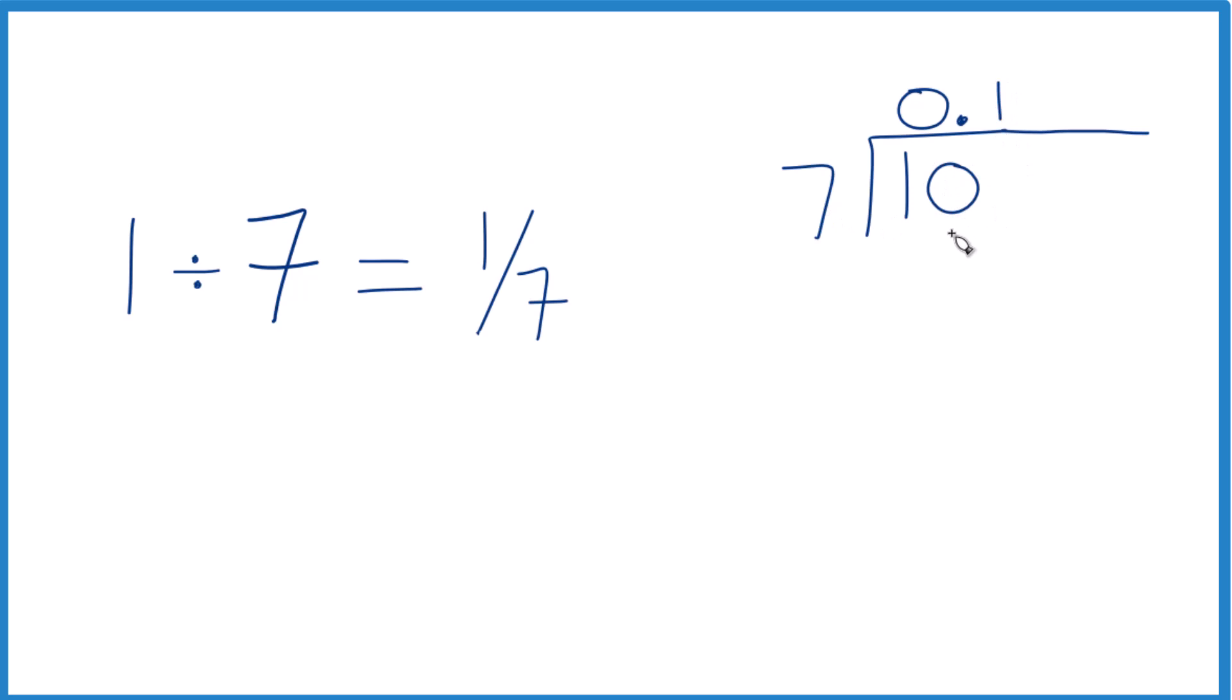1 times 7, that's 7. We subtract, we get 3. It doesn't go into 3, but we move over 1, call this 30. 7 times 4, that's 28. Subtract, we get 2.